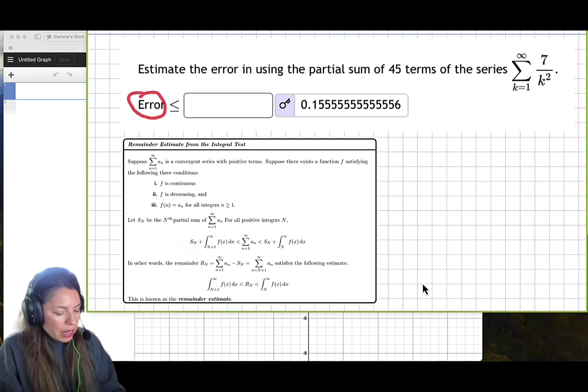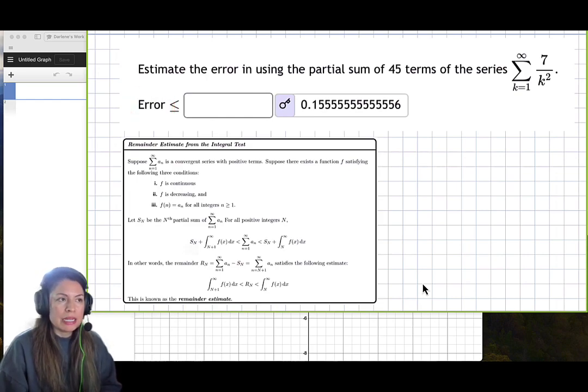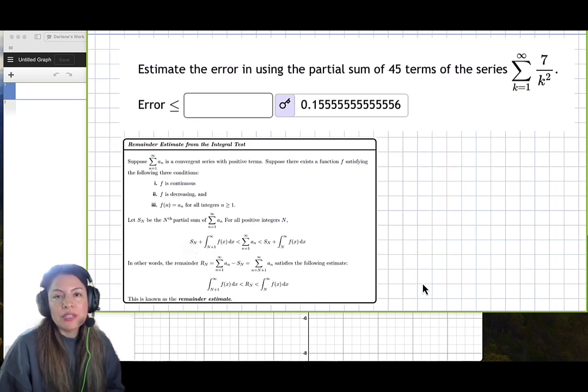So the error, this is the greatest error that it can be. Anything else of the partial sums would be less than it. So the largest error that it can be of the first 45 terms we're going to discuss and find.